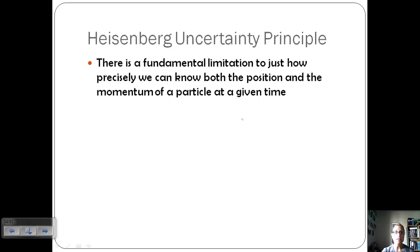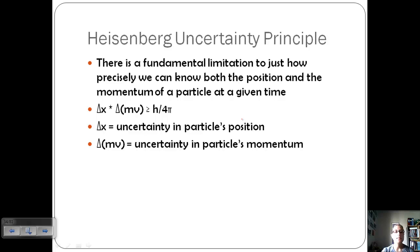This takes us to the Heisenberg uncertainty principle. What this says is that there's a limitation to just how precisely you can know both position and momentum of the particle at a given time. We have this expression where delta x times delta m times v is greater than or equal to h over 4 pi. Delta x represents the uncertainty in the particle's position. Delta m v is the uncertainty in the particle's momentum. Because if you remember from physics, momentum is mass times velocity. And h represents Planck's constant.